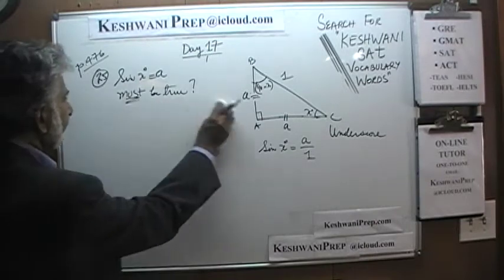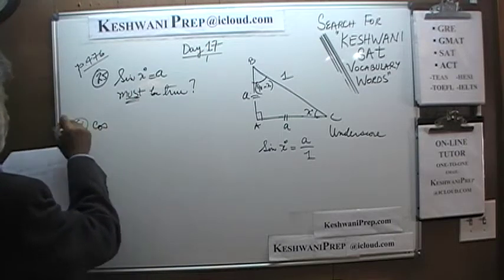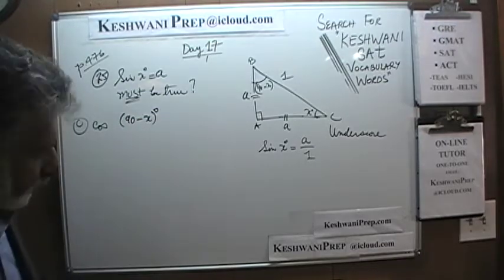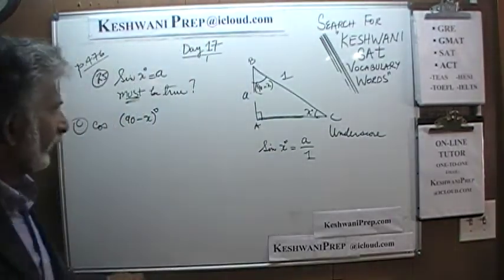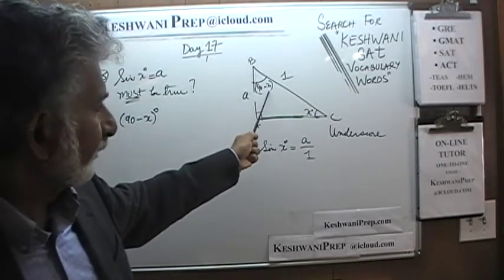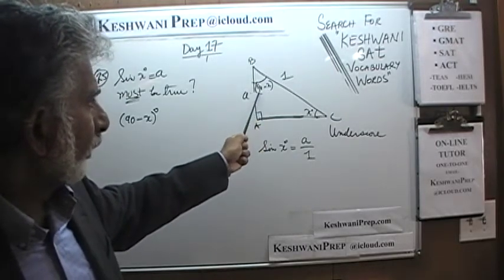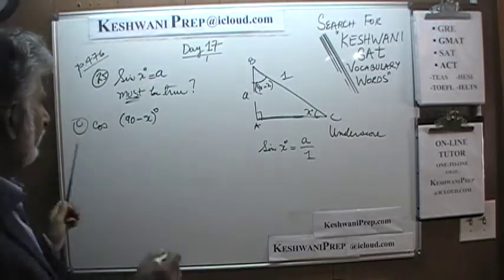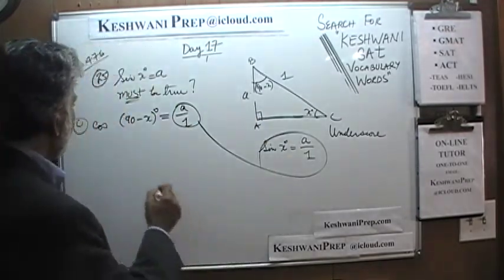Let's look at answer choice C, which says cosine of (90 minus x) degrees. The angle 90 minus x is already identified in our triangle. Cosine of that angle is adjacent over hypotenuse. It turns out that cosine of (90 minus x) is exactly the same as sine of x degrees — cosine of (90 minus x) equals A over 1, just like sine of x. So that is always true.